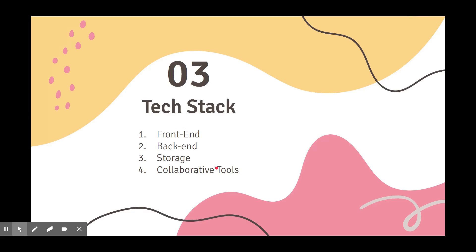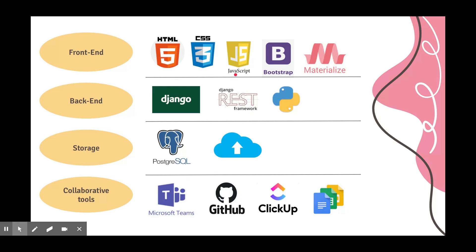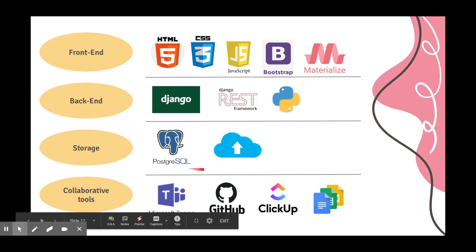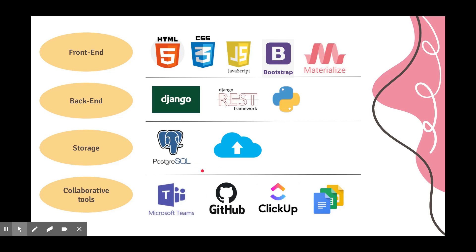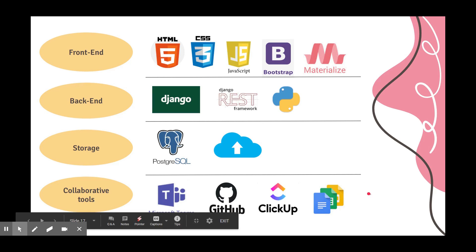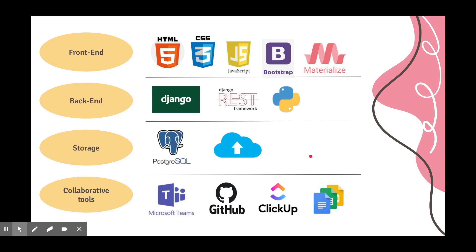Moving on to the tech stack. Since we do not require a front-end intensive website, we chose traditional tools: HTML, CSS, JavaScript, Bootstrap, and Materialize. Given the limited time, we aim to rapidly develop the application with a clean design, hence we chose Django, which offers both. For storing files and account information, we use a combination of database and file system to make it scalable. Since the account information and paths to files in the file system are relational, we chose to go with a relational database — specifically PostgreSQL, because it is more scalable than other choices. Microsoft Teams, GitHub, ClickUp, and Google Docs are used to collaborate.